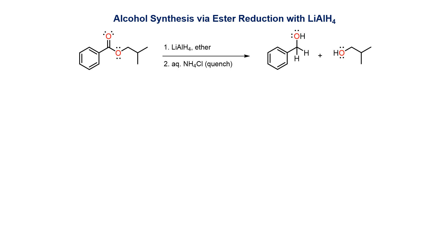While esters usually react slowly with borohydride, they react quickly with the more aggressive aluminium hydride reagent. An ester treated with LAH, followed by a quench with acid, produces two alcohols.